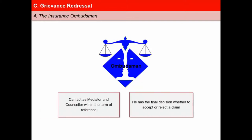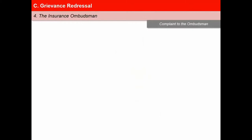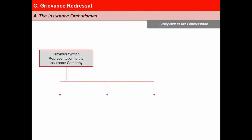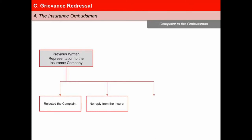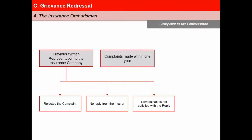Complaints can be made to the Ombudsman if: the complainant had made a previous written representation to the insurance company and the insurance company had rejected the complaint; the complainant had not received any reply within one month after receipt of the complaint by the insurer; or the complainant is not satisfied with the reply given by the insurer. Additionally, the complaint must be made within one year from the date of rejection by the insurance company, and the complaint must not be pending in any court, consumer forum, or arbitration.